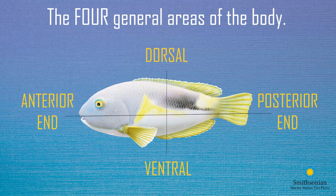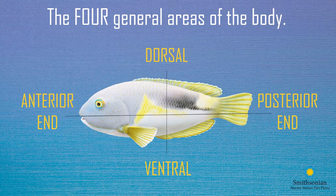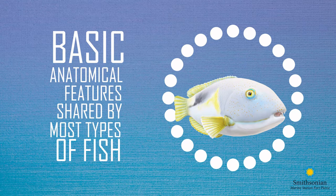Now let's take a look at this fish. If we draw two opposite lines that go across the fish, we get four planes or general areas of the body. The back is called the dorsal area, while the belly is located in the ventral area. The part of the fish where the head is found can be called the anterior end, and the part where the tail is found can be called the posterior end. So we have: dorsal, ventral, anterior, and posterior — helpful when naming and identifying the location of different types of fins or other body parts.